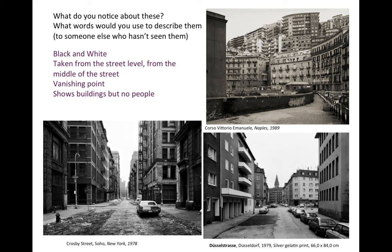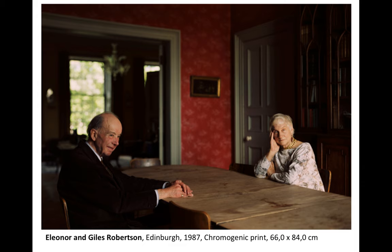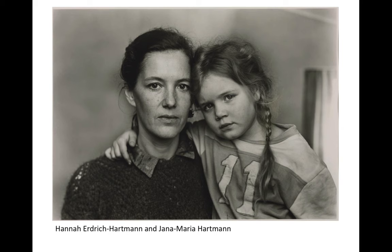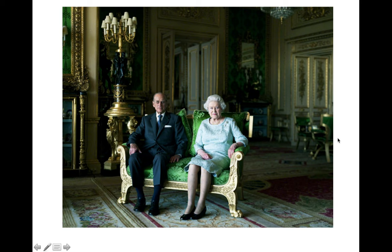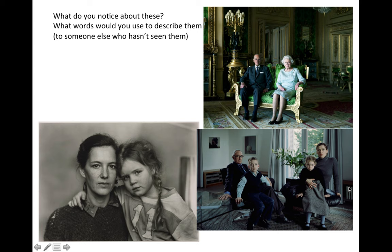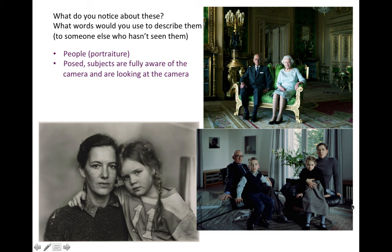I'm going to the next ones and it's going to look quite different. How will you describe these? What do you see? This is the Richter family — this would be Gerhard Richter; he's a painter. These people you should know: this is the Queen and her husband. What do you notice about this? It's kind of swung to the other extreme — from no people, suddenly it's all about the people. Definitely people would consider this to be portraiture. The subjects are fully aware that you are taking a picture of them; they are all looking straight on at you.